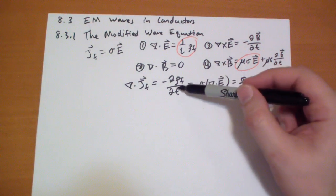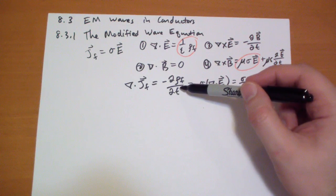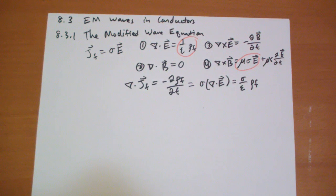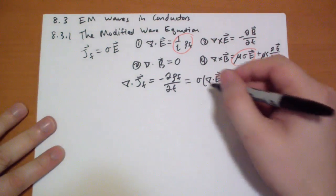So the negative time derivative of the charge density is equal to sigma over epsilon of the charge density. Which is a very interesting result. So that's a differential equation there.